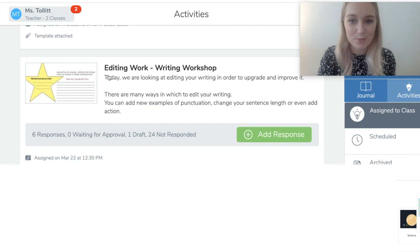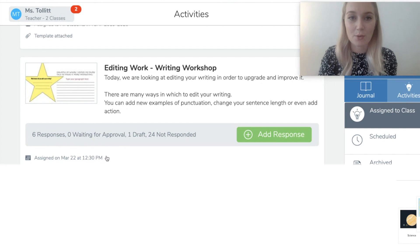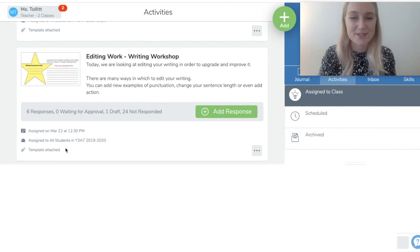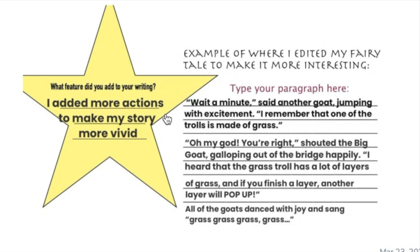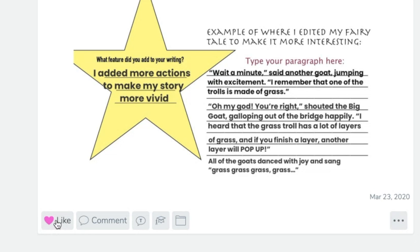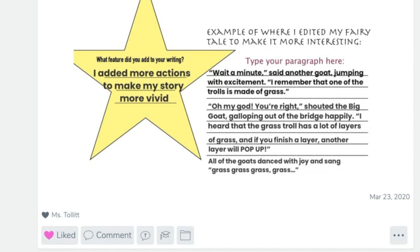I only assigned this today and I'll hopefully be seeing more responses throughout the day, giving me the opportunity to provide feedback. I'll now show you an example of how to give feedback, as there are a few different ways to do this. I can see this student has added action and speech to their story, which is really good. However, reading through, they haven't got many adjectives and mentioned the grass a couple of times — a good opportunity for description. The first thing I might do is add a like — students really enjoy receiving a little love heart, and it's a simple way to acknowledge that you've seen their work.